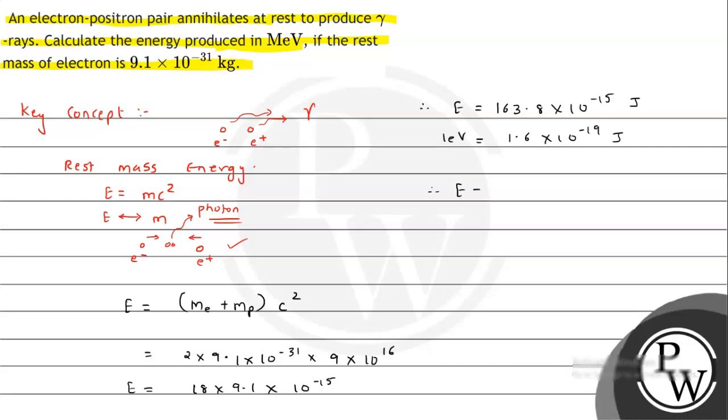So therefore we can say E will be equal to 163.8 times 10 to the minus 15 divided by 1.6 times 10 to the minus 19. So we will solve this. This result comes out to be 10 to the 4.